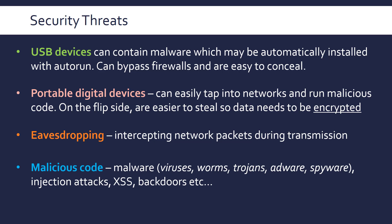Finally, malicious code covers anything that damages your network or system. Malware — malicious software — has five main types: viruses (code inside a host application that runs when the host runs), worms (similar but spread autonomously), Trojans (disguised as legitimate software but containing malicious code), adware (generates unwanted ads), and spyware (records user activity). Also included are injection attacks, cross-site scripting, and backdoors — code that allows unauthorized future access to a program.